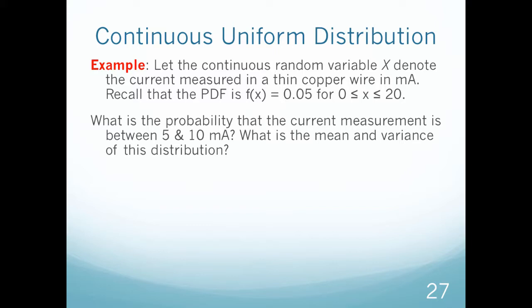Let's look at an example. Let the continuous random variable x denote the current measured in a thin copper wire in milliampers. Recall that the PDF is f of x equals 0.05 for x between 0 and 20. What's the probability that the current measurement is between 5 and 10 milliampers? What's the mean and variance of this distribution?